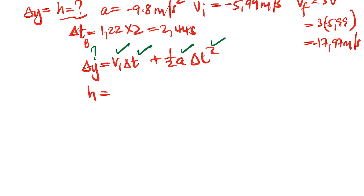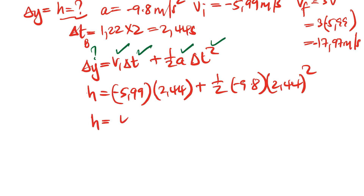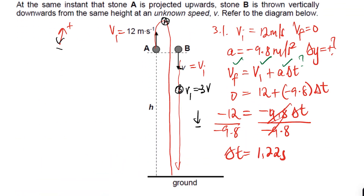Substituting all values into the calculator, the height of the building is 43.76 meters. So the height of the building is 43.76 m, which equals the displacement that stone B covers when it reaches the ground.